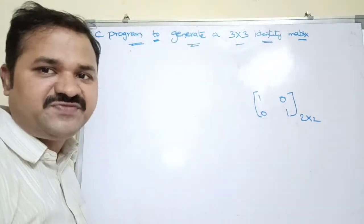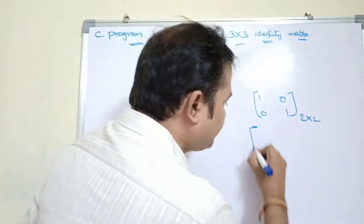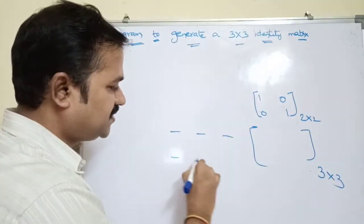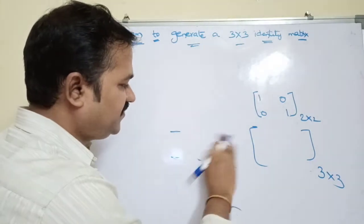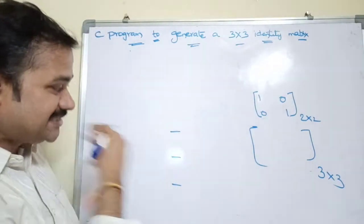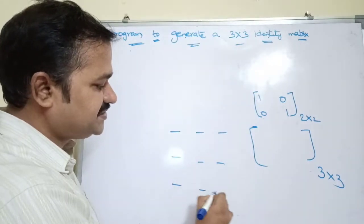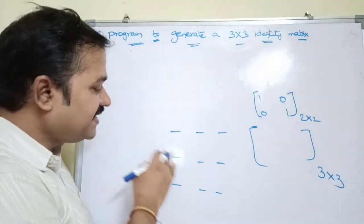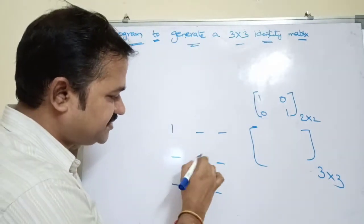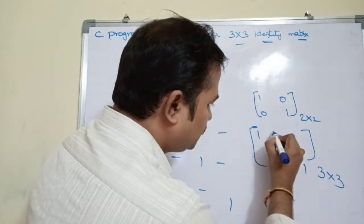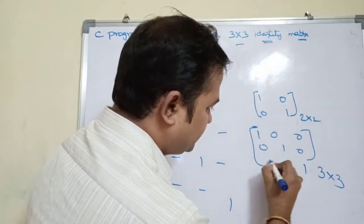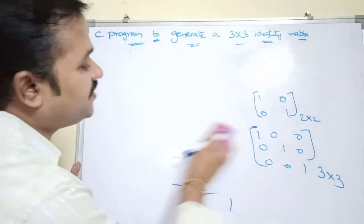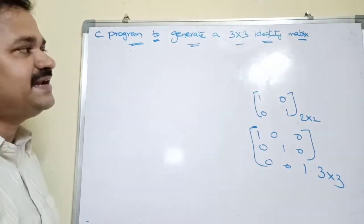In this program our target is to display a 3 by 3 identity matrix. A 3 by 3 matrix has 3 rows where each row contains 3 elements. The diagonal elements should be 1, and the remaining elements are 0. So we have to develop a program to generate or display a 3 by 3 identity matrix.